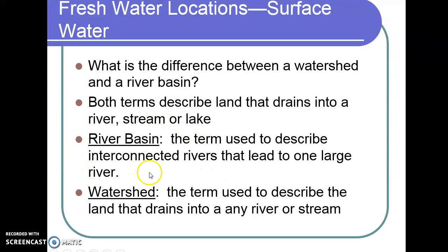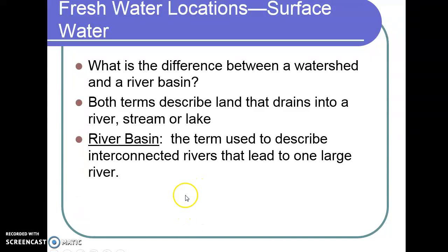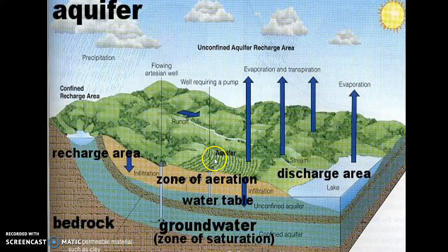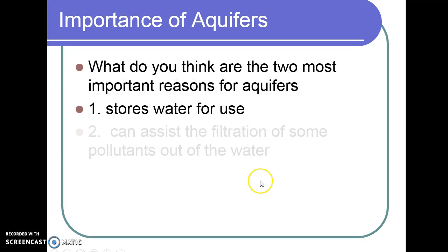The next two big terms are river basin and watershed. The key to understanding the difference is that watersheds drain into a river basin. Watersheds are the land around — all the area around a stream and around a lake would be a watershed. They then connect into your river basin.